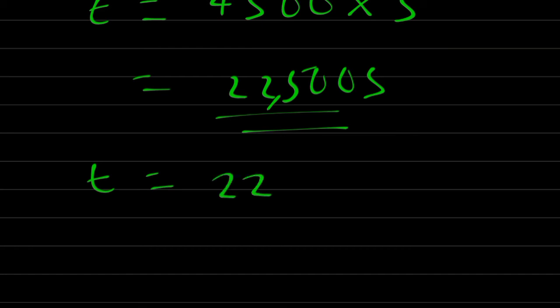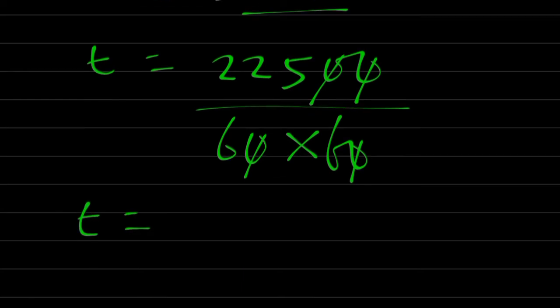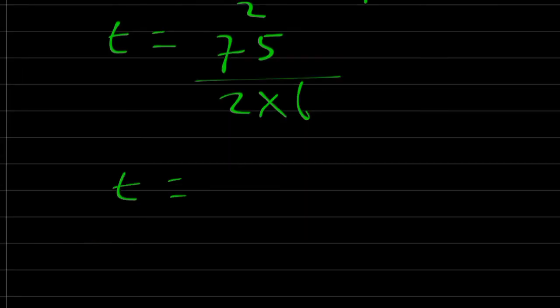Therefore, I'm going to have 22,500 divided by 60 times 60. Zero will cancel zero. Zero will cancel another zero here. Therefore, I have T to be equal to 6.25 hours.